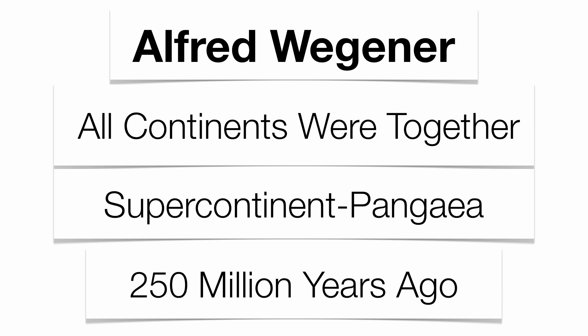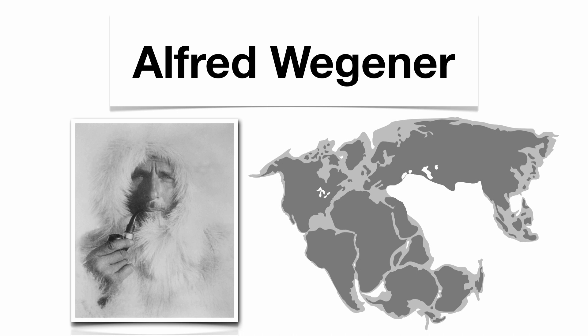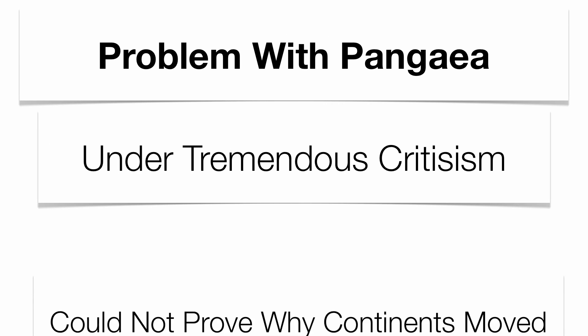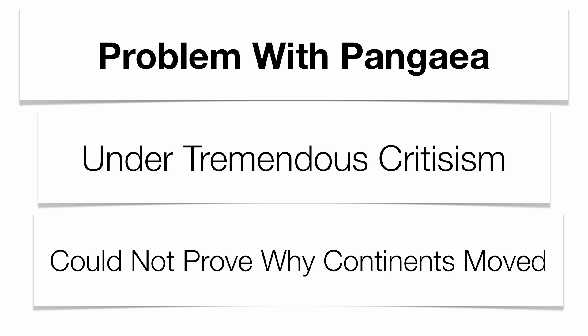Wegener came under a tremendous amount of criticism. You can see Wegener here with Pangaea as it might have looked approximately 250 million years ago. The criticism was widespread because the major problem with this idea was the fact that he couldn't prove why the continents moved. He didn't know anything about the oceanosphere or the convection cells. Unfortunately, Wegener passed away well before this idea even came into existence. It wasn't until well after World War II had ended that convection and the oceanosphere became part of the model of continental drift.